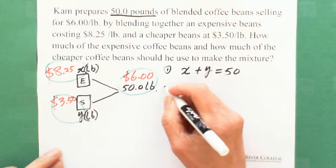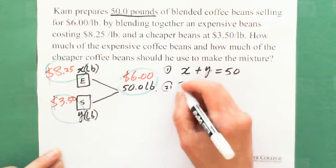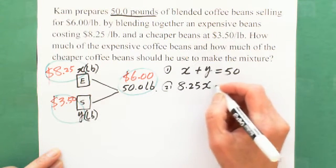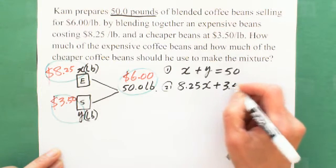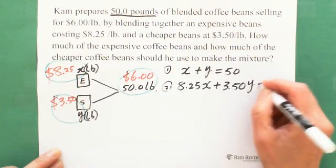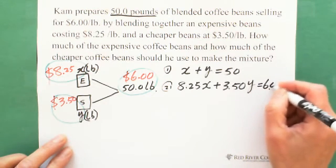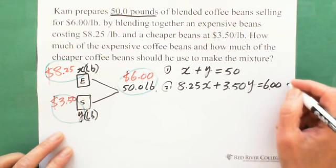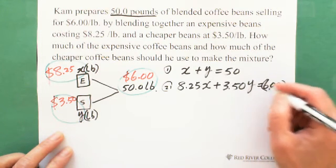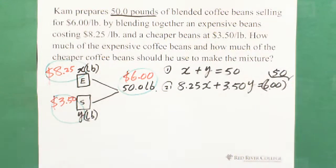So then we can write the second one. You don't need to carry units. So $8.25 times X plus $3.50 times Y equals $6.00 times 50. Right? So this is the second equation.